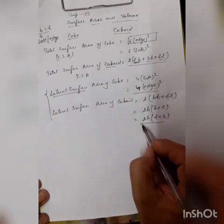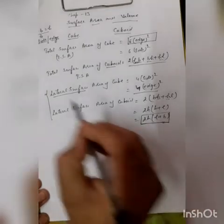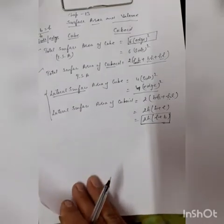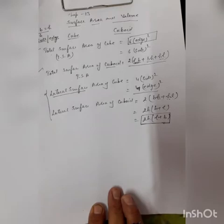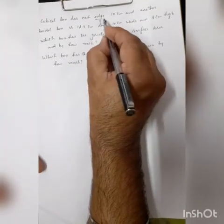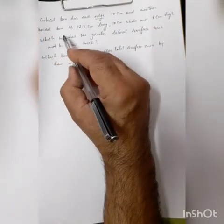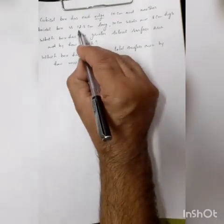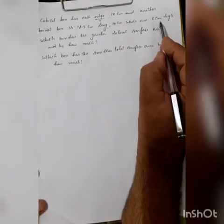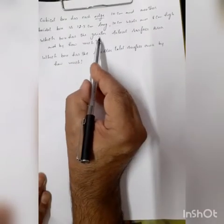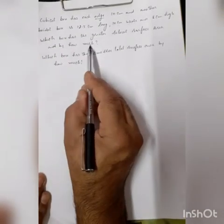In this fifth question, all four formulas will be used. Let's do an example so all formulas become clear. Question number 5, Exercise 13.1: a cubical box has each edge of 10 centimeters, and another cuboidal box is 12.5 centimeters long, 10 centimeters wide, and 8 centimeters in height. There are two parts to this question.